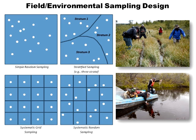That is independent of whether you're on land or in the water. There are lots of different types of sampling design. You can think about things in a random fashion with simple random sampling in the upper left-hand corner, stratified sampling, systematic sampling in the bottom left-hand corner, and systematic random sampling in the bottom right-hand corner.